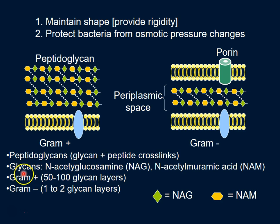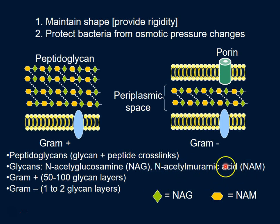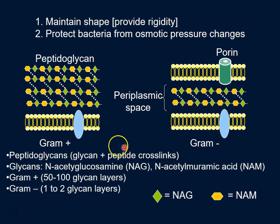The two major sugars involved in cell wall synthesis are N-acetylglucosamine or NAG, and N-acetylmuramic acid or NAM. I'll use the abbreviations NAG and NAM to refer to these glycans. Essentially, NAG and NAM are the building blocks of the cell wall.